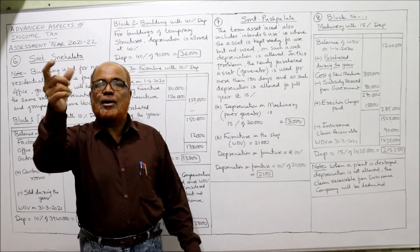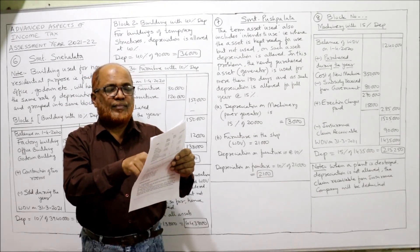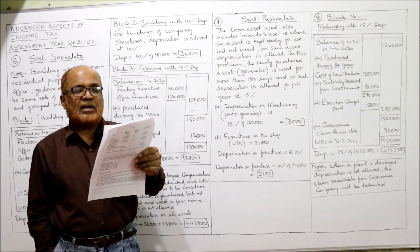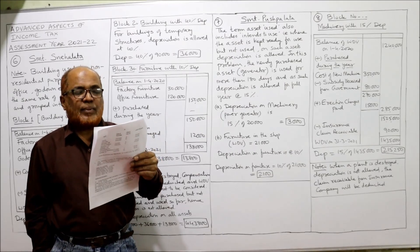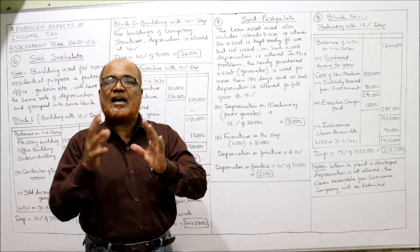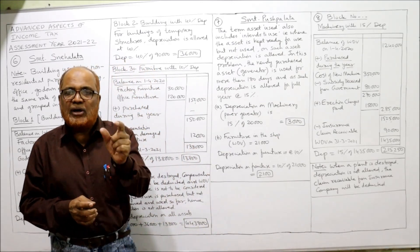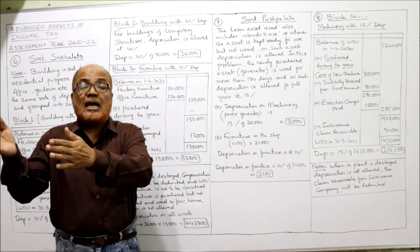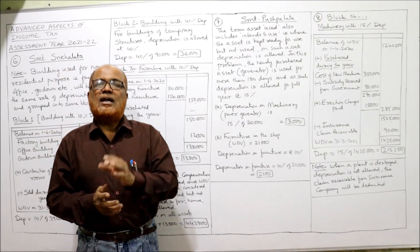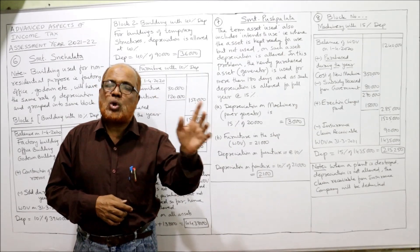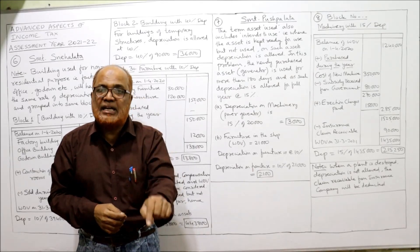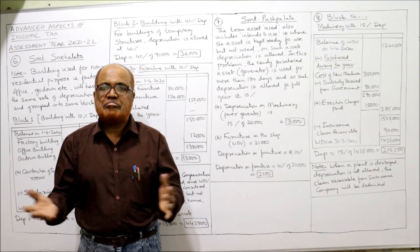On 15th January 2021, due to a fire accident, one machine whose WDV is Rs. 1,25,000 is fully damaged and the insurance company admitted the claim for Rs. 90,000. The Income Tax Act says the WDV of the machine which was destroyed should not be considered — only the amount received from the insurance company, Rs. 90,000, will be deducted from the block.